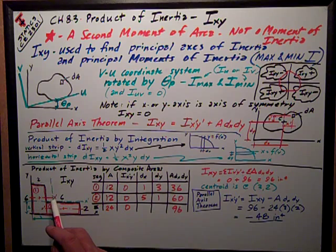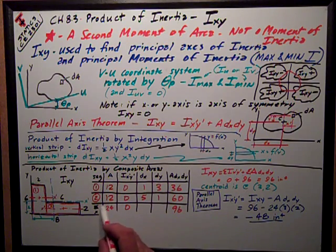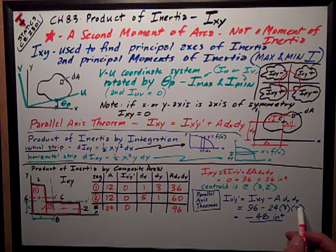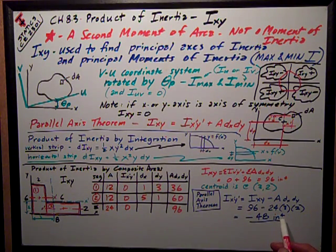the distance from the centroidal axis to the axis that I've computed product of inertia about. 96 minus the area, 24 of the whole thing, times three, times two, is equal to negative 48 inches to the fourth.